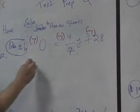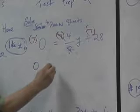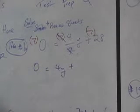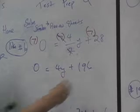And so we've got 0 equals, and then we cancel that, 4y, plus 7 times 28. What's that? Anybody know? 196. Yeah. 196.